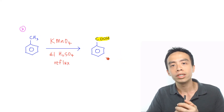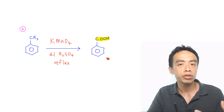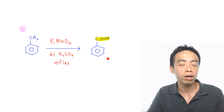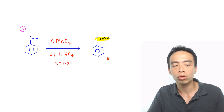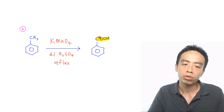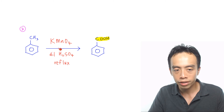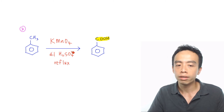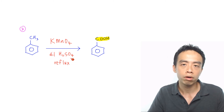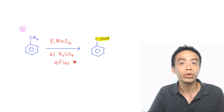Must-know reaction number 3 for methyl benzene is the oxidation of the alkyl group to form benzoic acid. This reaction is done using KMnO4 in dilute H2SO4 with heat or reflux.